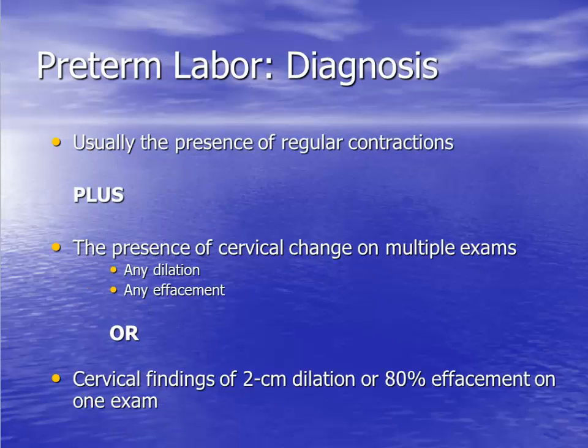Preterm labor is diagnosed when uterine contractions are present that lead to cervical change before 37 weeks of gestation. If a preterm patient presents with a cervical examination of 2 cm dilation and/or 80% effacement, this is automatically considered to be preterm labor.